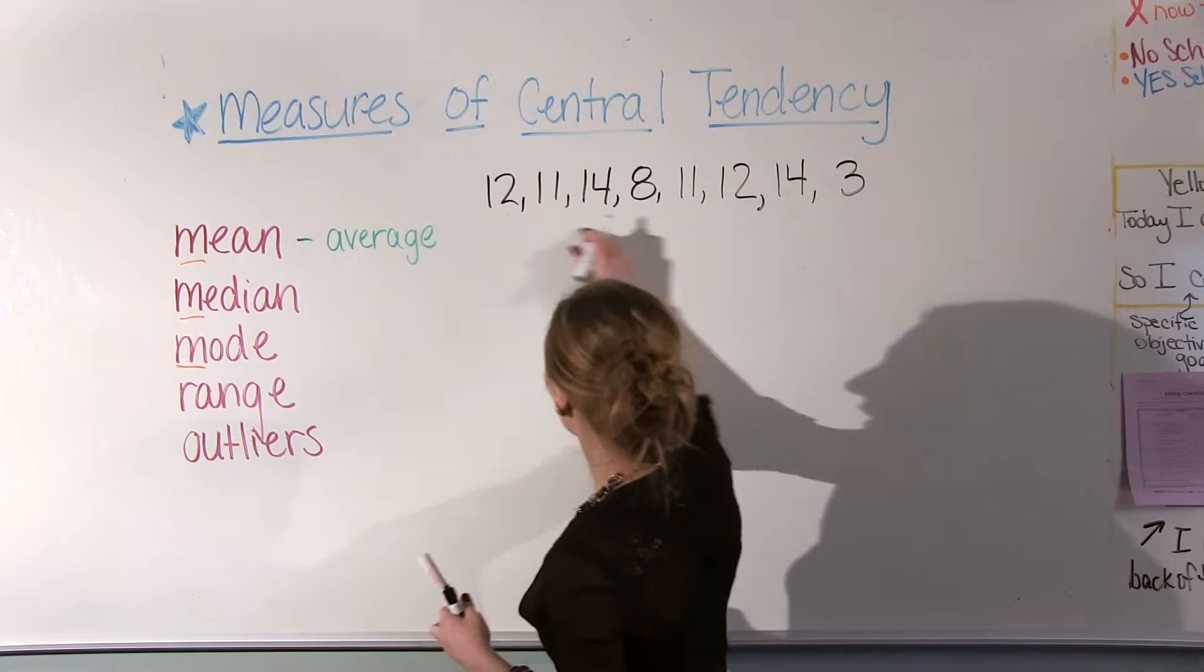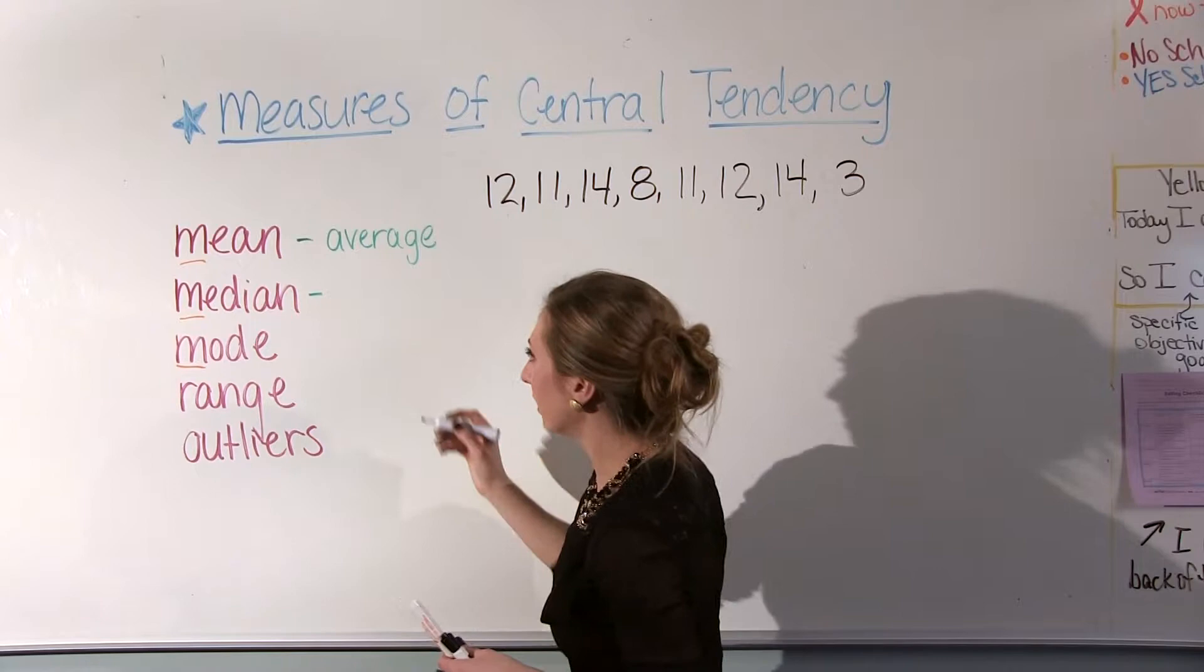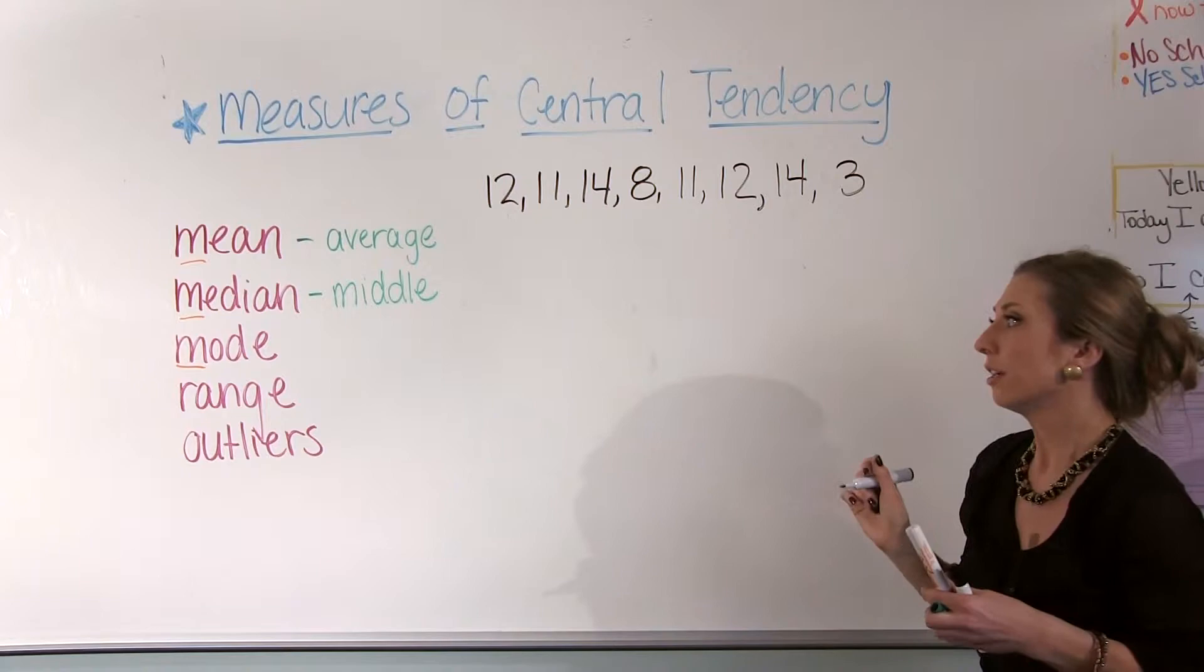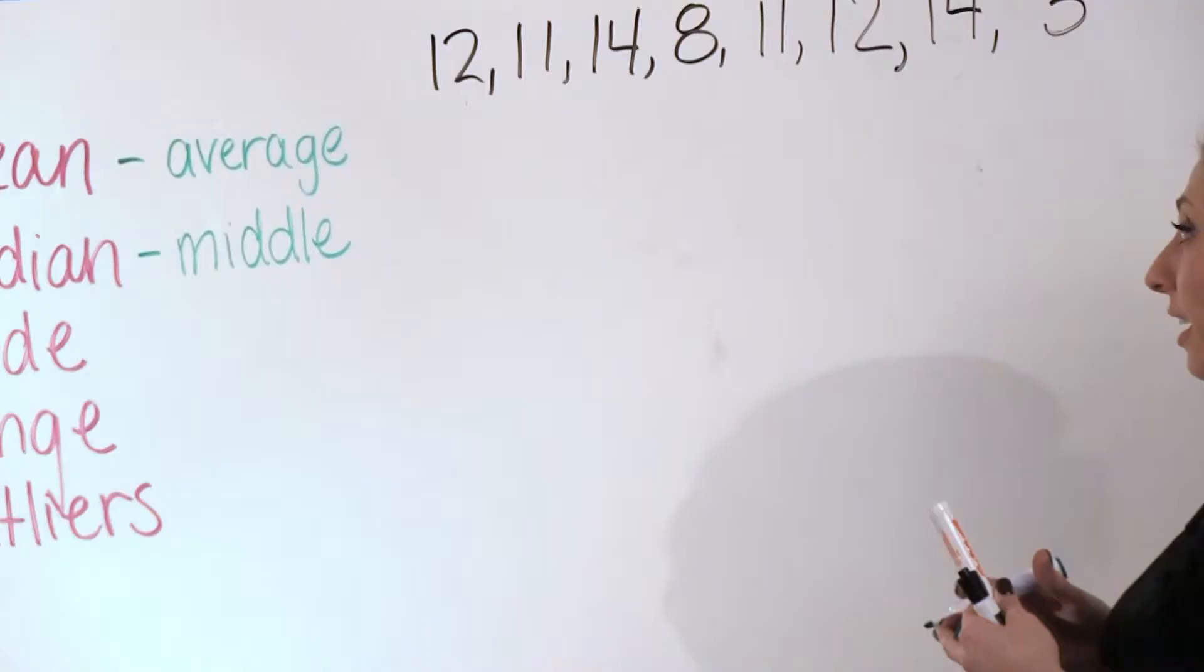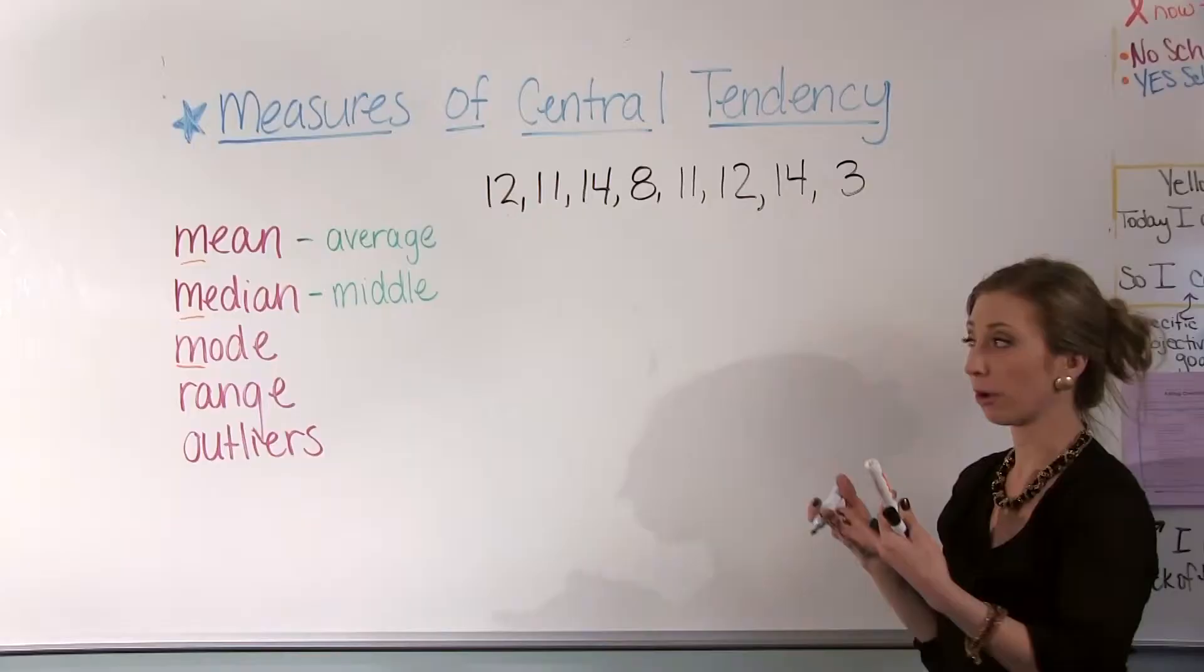The median is the middle, and I remember this one because I think of when I'm driving in the road and I think of the median. The median in the road is always in the middle of the road, and so that's how I remember that the median is the middle number of our set of data.